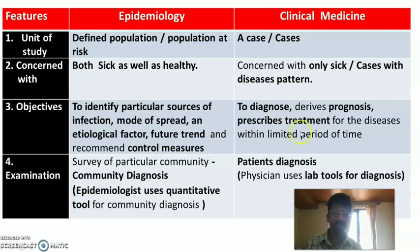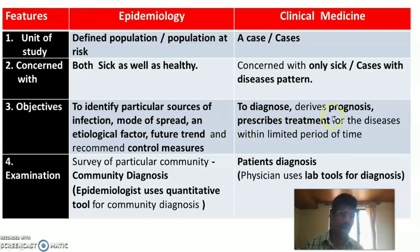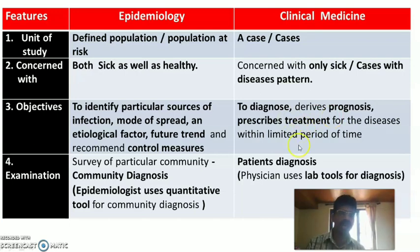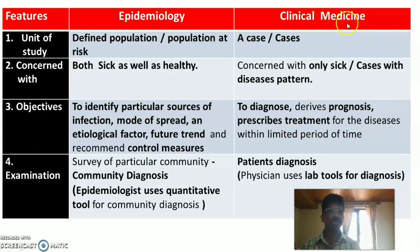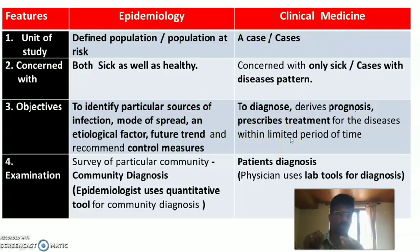Whereas in clinical medicine, the main objectives are to diagnose a particular problem or case, derive its prognosis, and prescribe specific treatment within a limited period. The objectives of clinical medicine are thus limited to diagnosis, prognosis, and prescribing specific treatment.